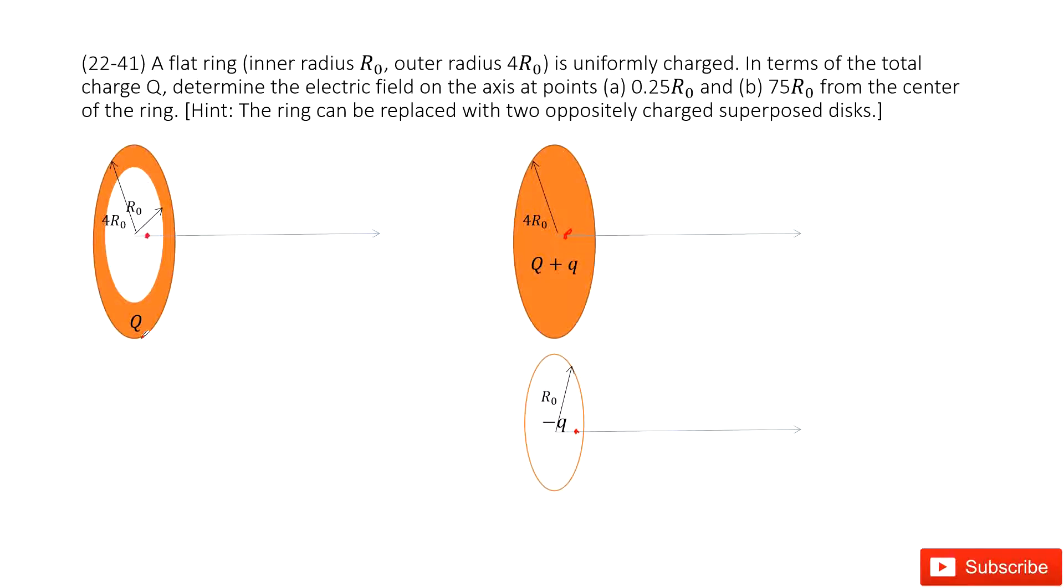We can consider this as a model of the electric field of an infinite plane. The problem gives you a hint that the ring can be replaced with two oppositely charged superposed disks.